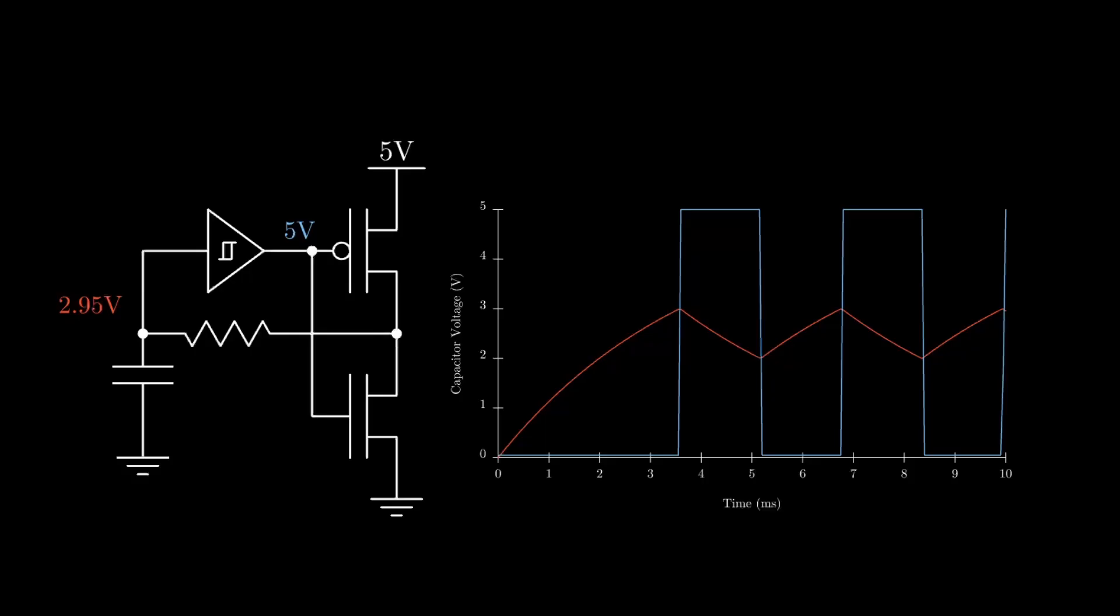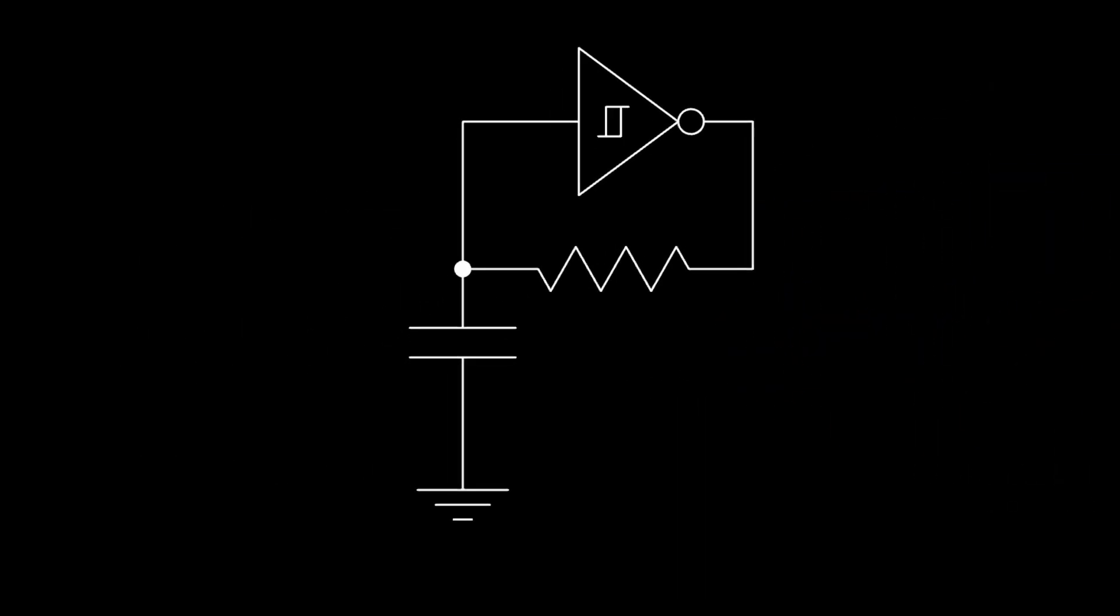If you've ever studied digital logic, you might have noticed that the two transistors actually form an inverter or a not gate. So we can combine the transistors with the Schmitt trigger. In other words, we can use an inverting Schmitt trigger. And there we have it, a complete RC clock circuit using an inverting Schmitt trigger, also known as a relaxation oscillator.